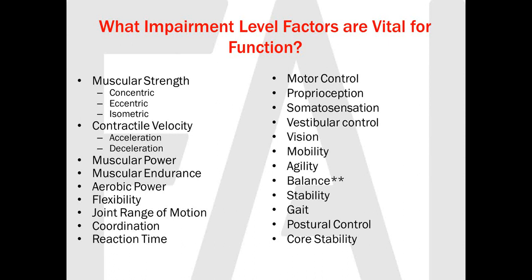Not everyone is going to have the same need for these factors. Somebody might have a big deficit in muscle strength and need to focus on that, while someone else's strength might be fine. In our circuit program, how do we adapt individual client needs to match all these functional factors? It's difficult to think about juggling all of these and progressing them appropriately, but it's worth it. When you focus on this panorama of functional factors and really address them appropriately, function really goes up.